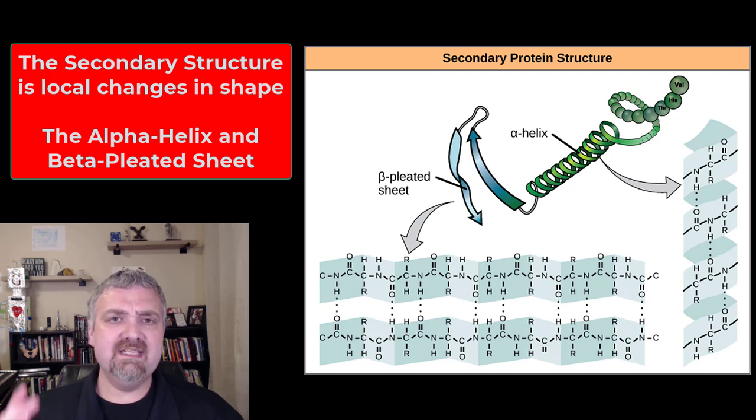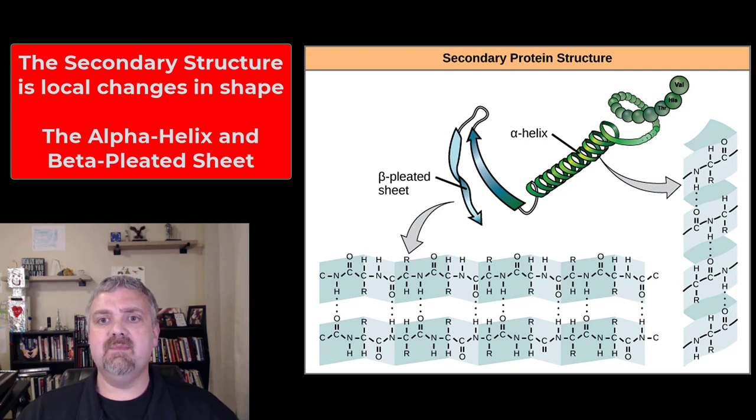Next, we have the secondary structure. I call these local changes in shape. The two types of local changes in shape that make the secondary protein structure are the alpha helix and the beta pleated sheet. So the primary structure is the sequence of amino acids. The secondary structure involves local changes in shape—the alpha helix or the beta pleated sheet.